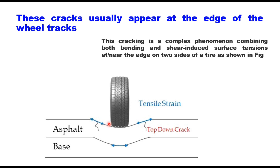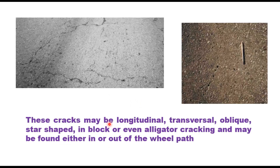After a certain level of damage accumulation, top-down cracking initiates at the surface and propagates downward, taking different shapes. These cracks may be longitudinal, transversal, oblique, or even star-shaped — in block or even alligator cracking — and may be found either in or out of the wheel path.